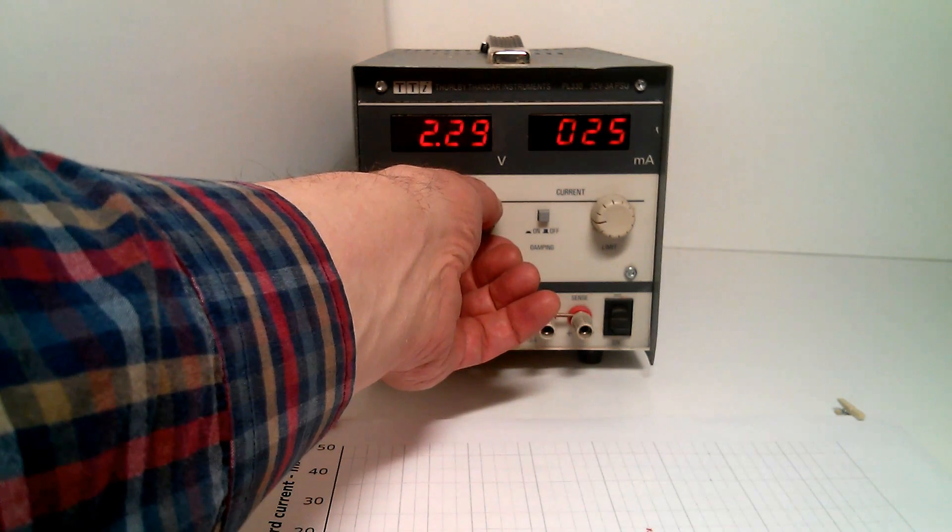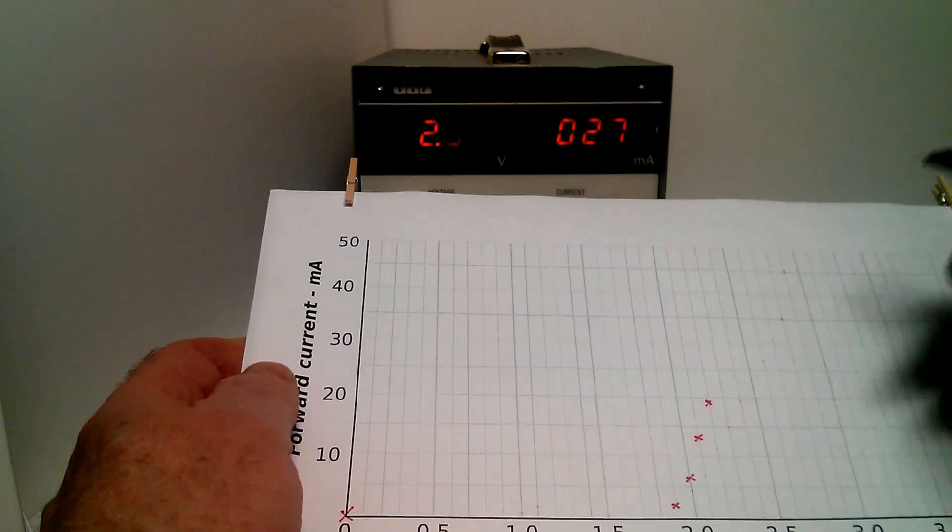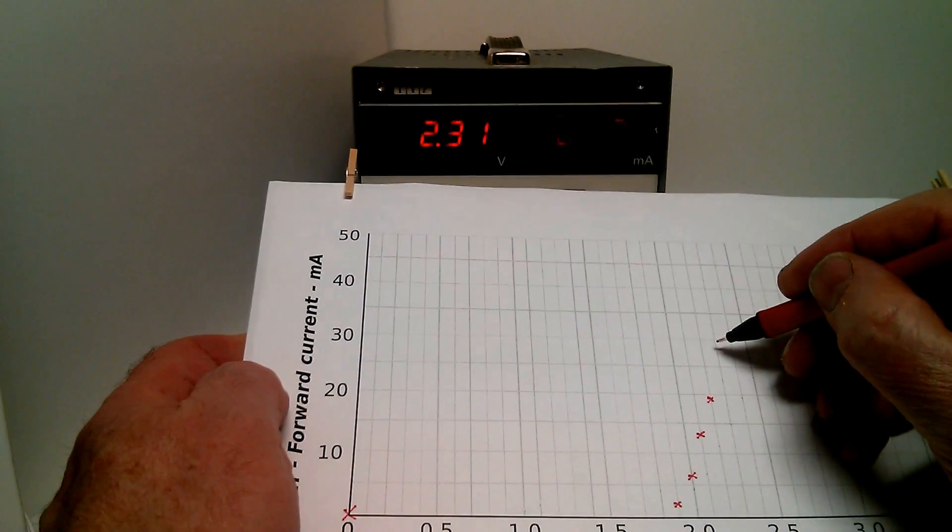At 2.3, we've got about 27 milliamps, so that takes us to about there.